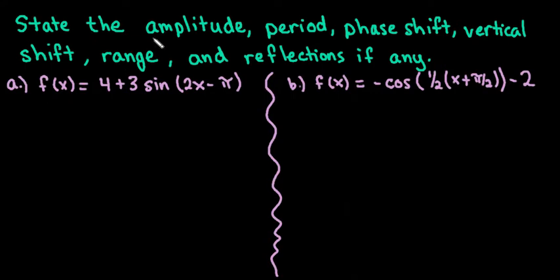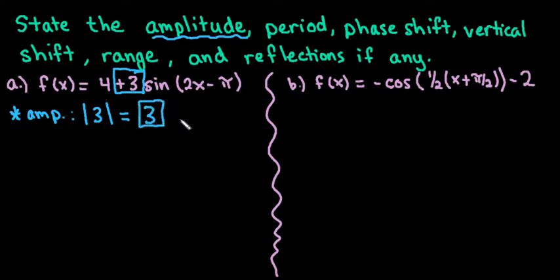The first thing we're going to talk about is the amplitude, and I'm going to do part A entirely through and then do the same thing for B. The amplitude is always whatever number is in front of sine, the absolute value of that term. So we take the absolute value of 3 and we see that our amplitude is 3. That means the height of our wave is going to be 3 points above or below wherever the midpoint of our wave is.